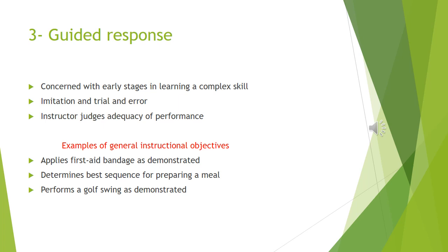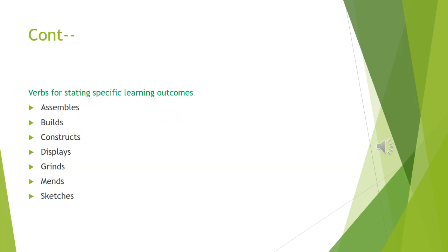The level of psychomotor domain concerned with early stages in complex skill learning is guided response. It includes repeating an act that was demonstrated by an instructor, which we call imitation. Adequacy of performance is judged by an instructor or by suitable criteria. General instructional objectives include: applies first aid bandage as demonstrated, determines best sequence for preparing a meal, and performs a golf swing as demonstrated. Verbs for stating specific learning outcomes include: assembles, builds, constructs, displays, grinds, and sketches.